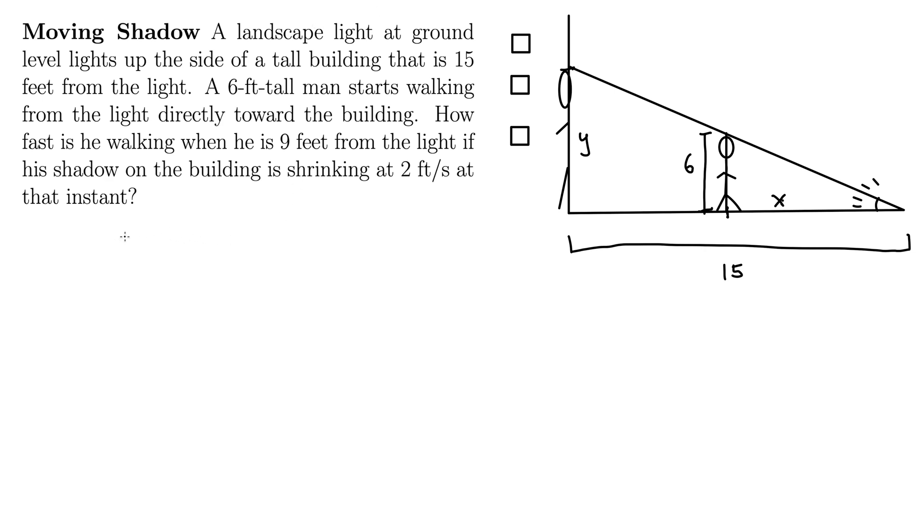We also have our givens and our goal. So let's write that out. You always want to draw a picture first, label what you can, and then clearly state what's given in terms of the rates and what your goal rate is. These are related rates. So let's see, what are we given? I'm not going to write everything in here, I'm just going to focus on the rates.